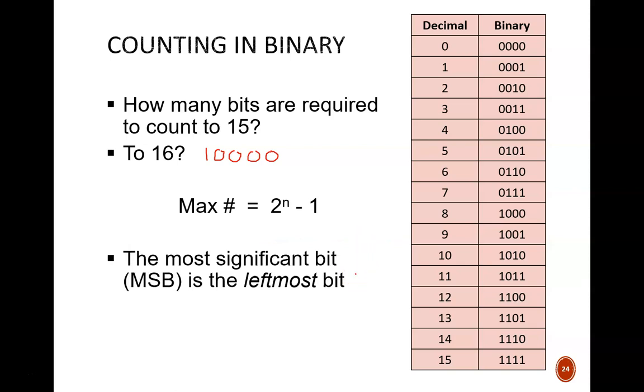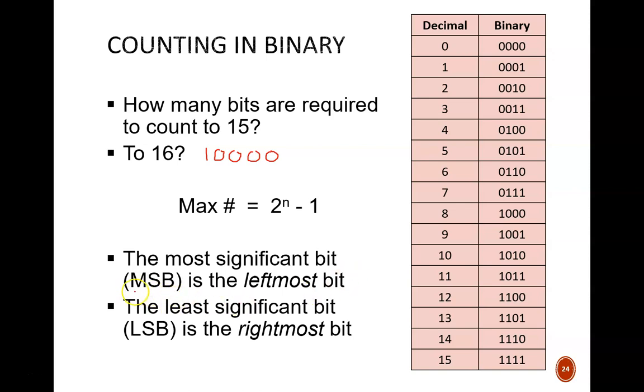Two important terms are defined here. In a binary number, the most significant bit, or MSB, is the leftmost bit. It is called most significant because it carries the largest weight. Conversely, the least significant bit, or LSB, is the rightmost bit. So, when you see those abbreviations in the future, you should know on which side of the number to look.